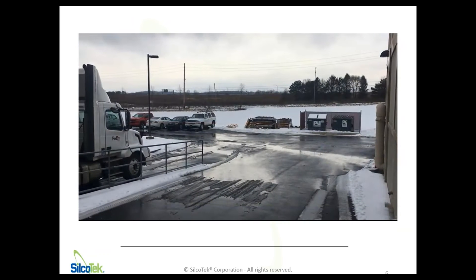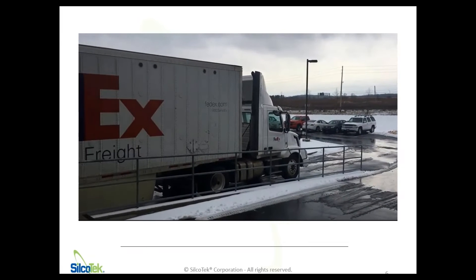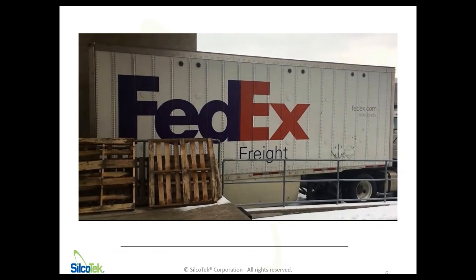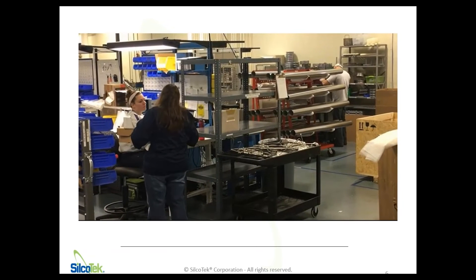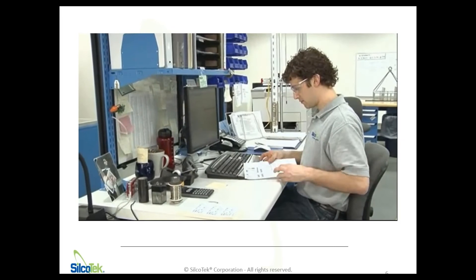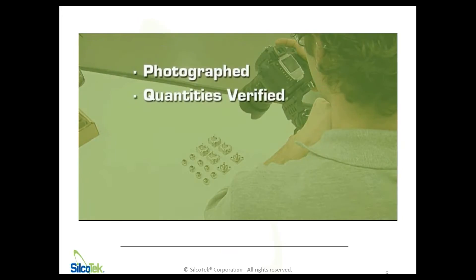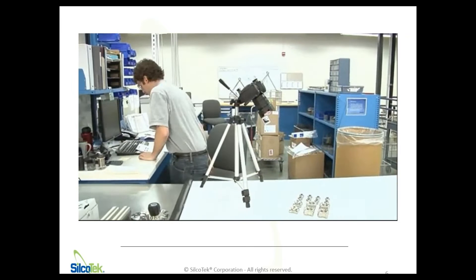Every part that Silcotech processes is sent to their facility by you, the customer. We do not stock or sell any already-coated products. Customer shipments are received throughout the day and then staged for inspection, documentation, and order confirmation. Silcotech receiving technicians are trained to thoroughly inspect incoming parts for damage, compatibility, and discrepancies with the order. Once inspected and verified to not be damaged, your parts are photographed, order quantities are verified, procedures and routings are identified, packaging is segregated, and a unique travel sheet is created for your order. You are then notified that your parts are ready to begin the process.